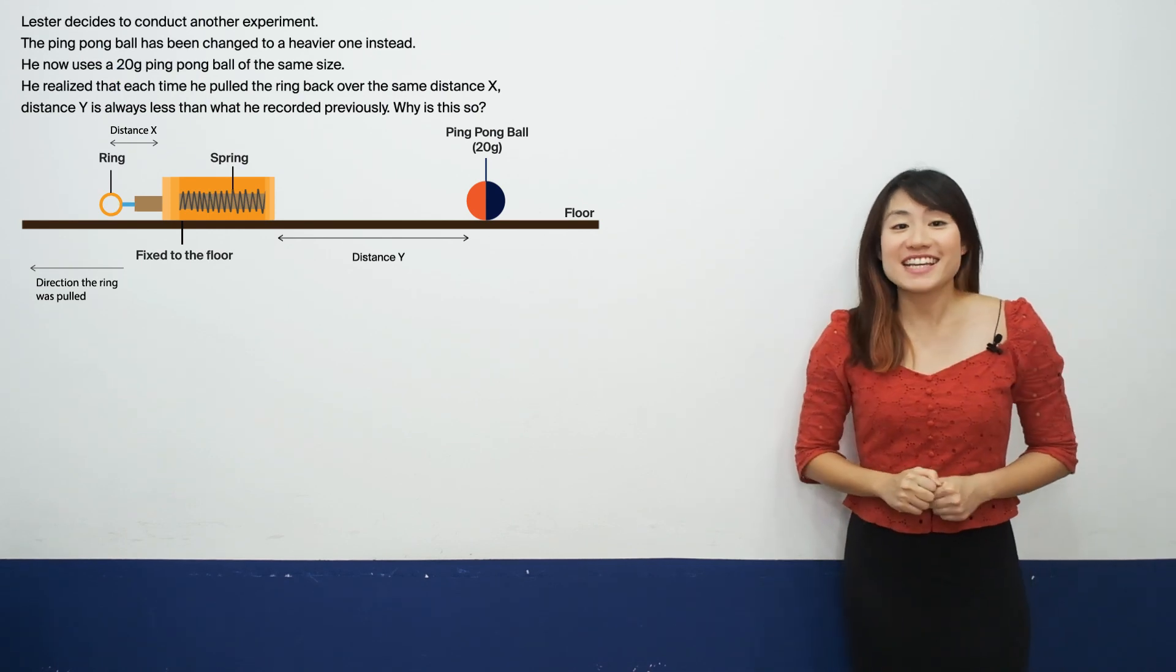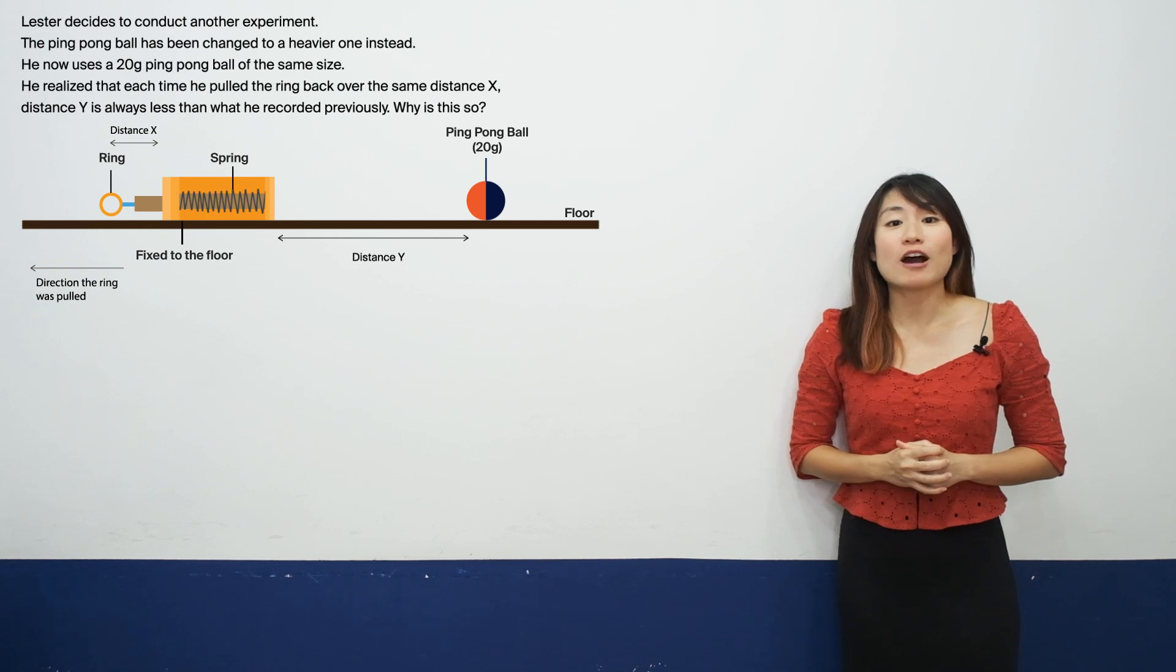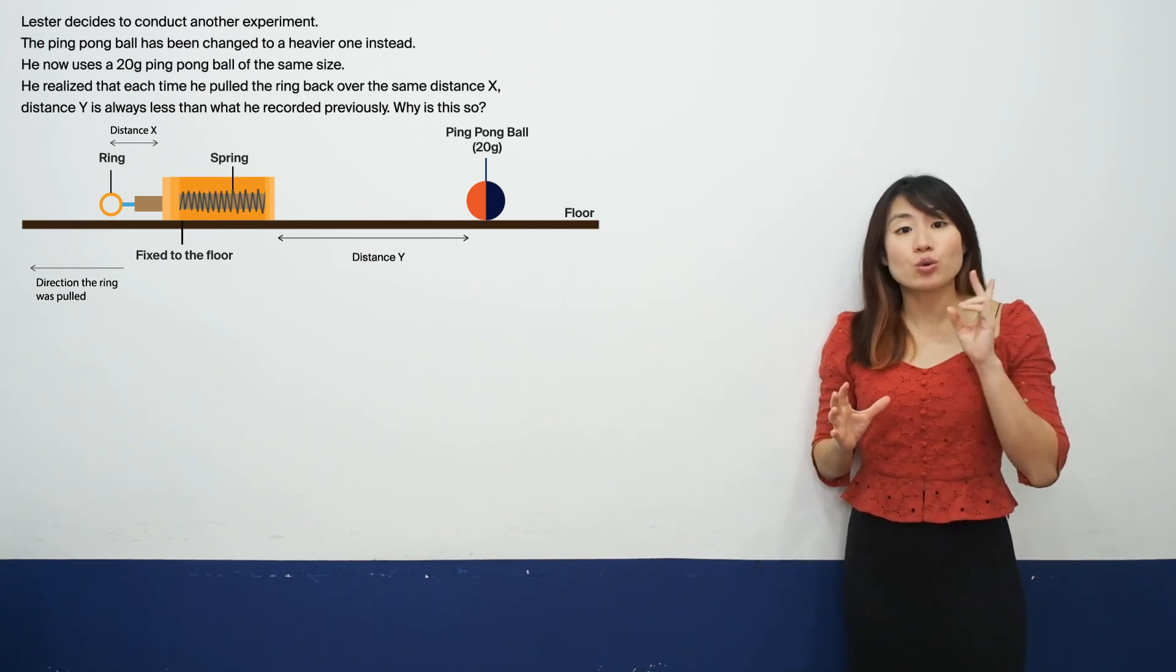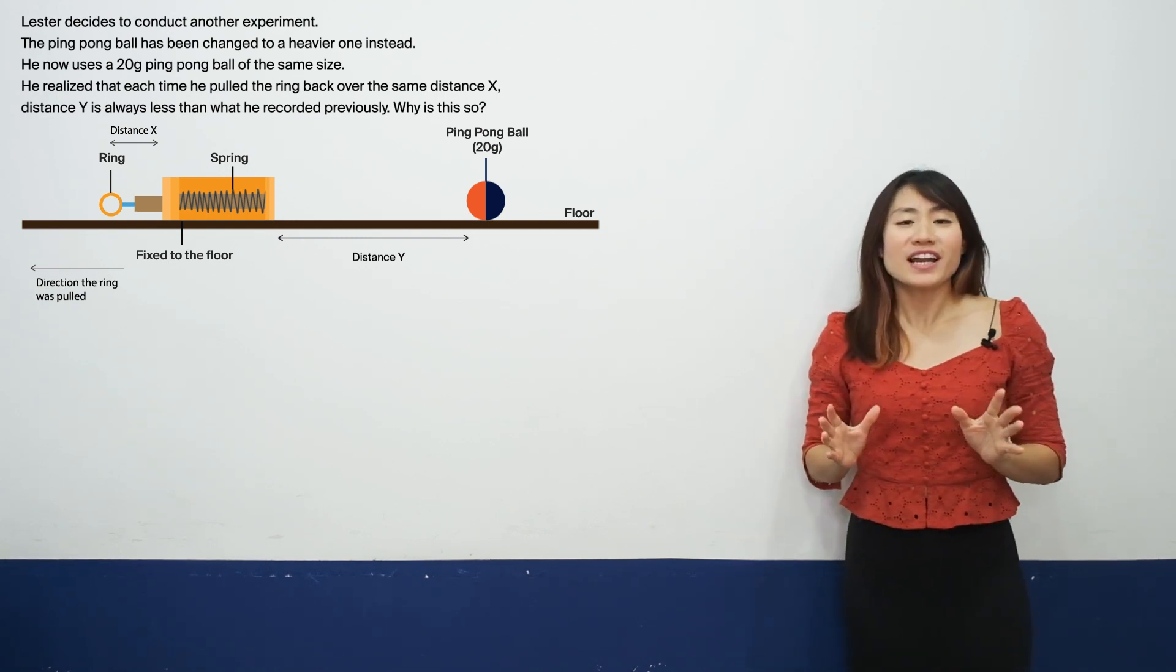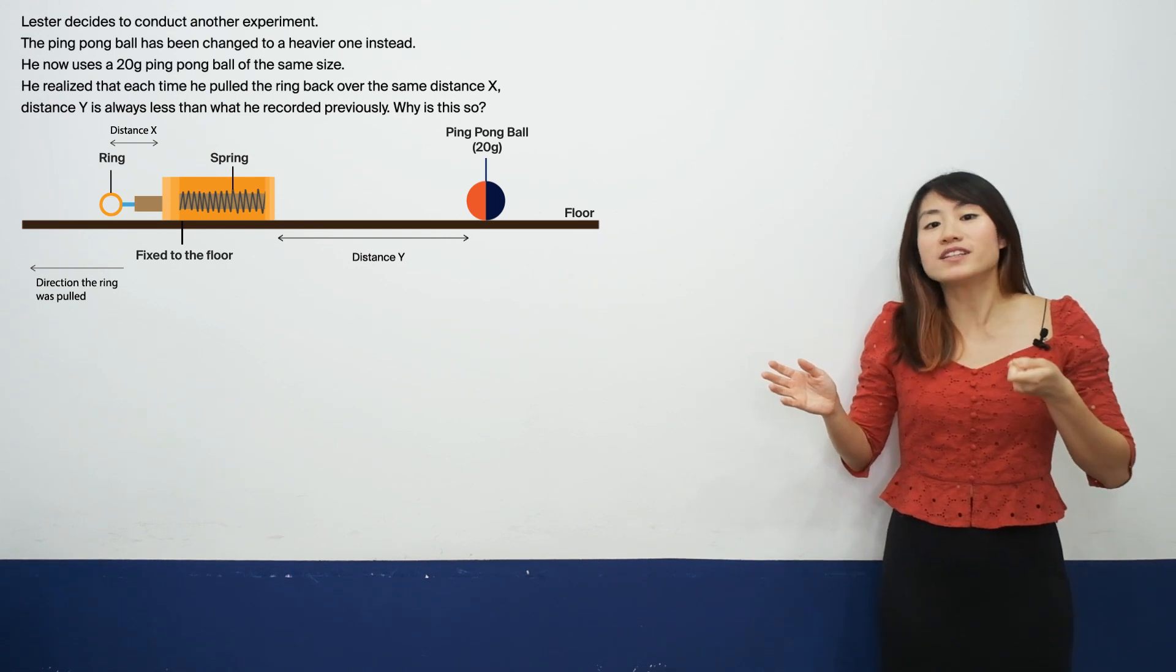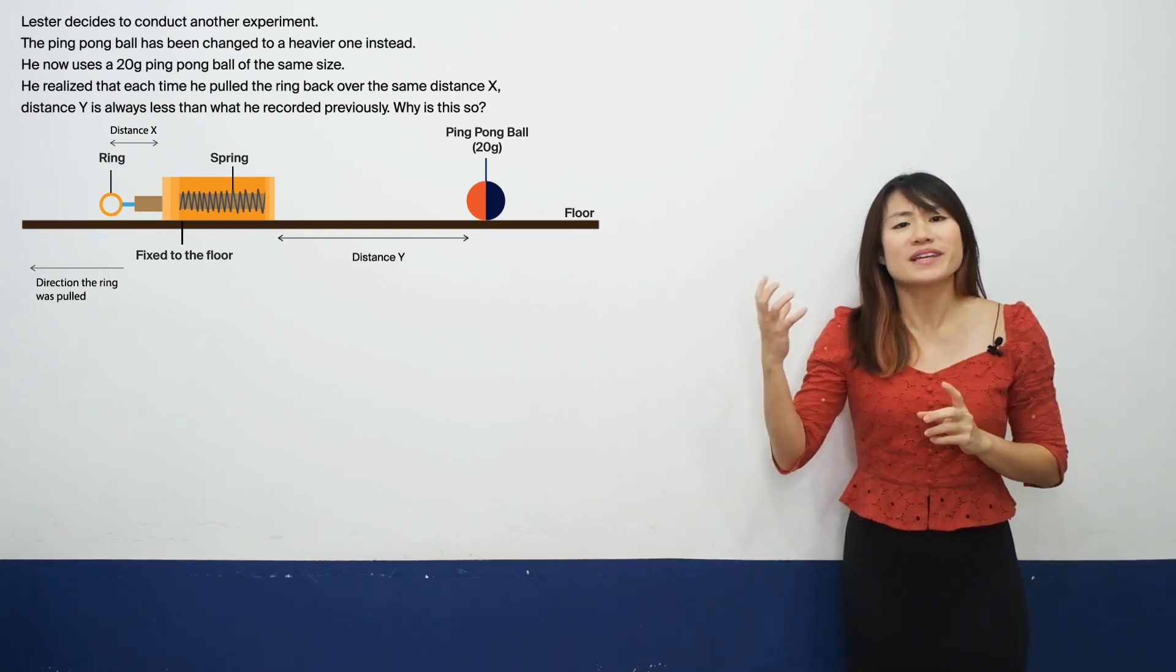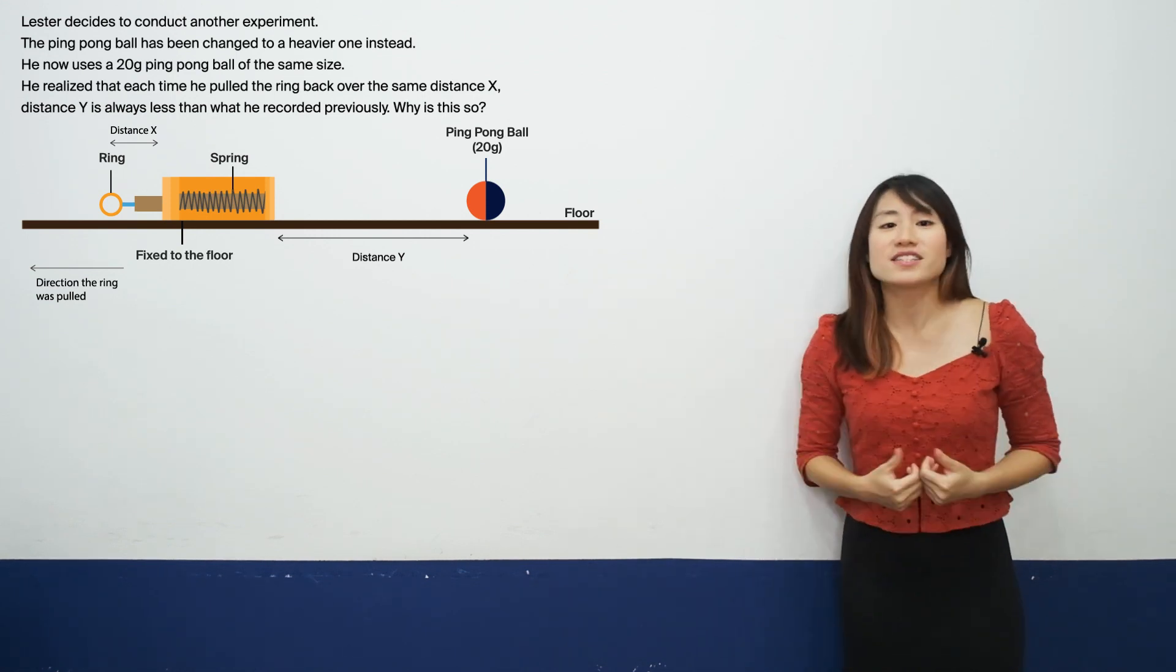For part B, Lester decides to conduct another experiment. The ping pong ball has now been changed to a heavier one instead. He now uses a 20 gram ping pong ball of the same size. He realized that each time he pulls the ring back over the same distance X, distance Y seems to always be less than what he recorded previously. Now why is this so?